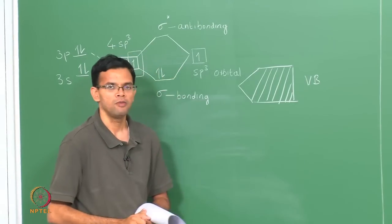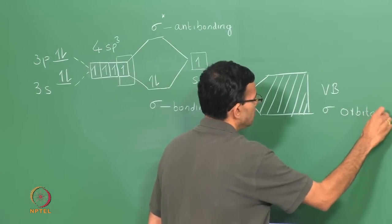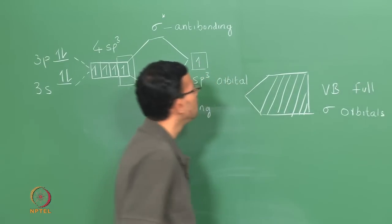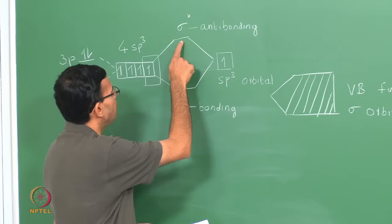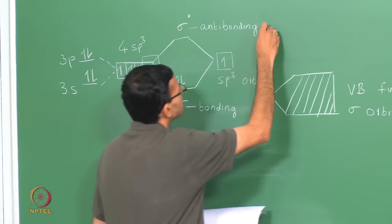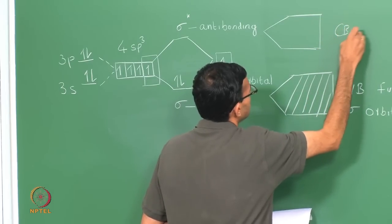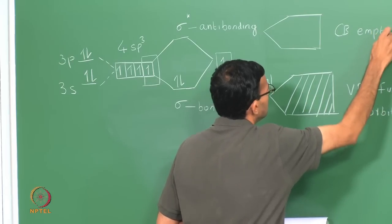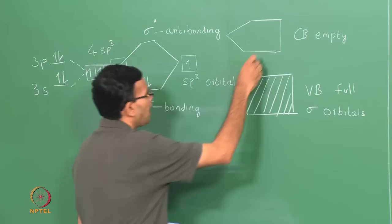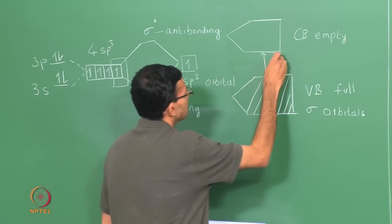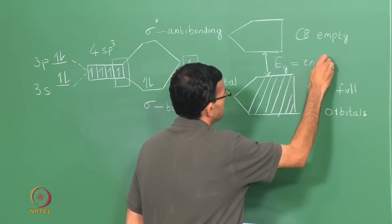Sigma forms a band — the valence band — formed by interaction of all the bonding orbitals, and the valence band is completely full. Similarly, the conduction band is formed by interaction of the sigma star orbitals and is completely empty. Between the valence band and the conduction band there is a gap called the energy gap or band gap, denoted by Eg.